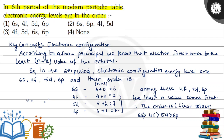So the overall order is 6s, then 4f, then 5d, then 6p. The right answer is option 1. Hope you understood it well. Best of luck. Thank you.